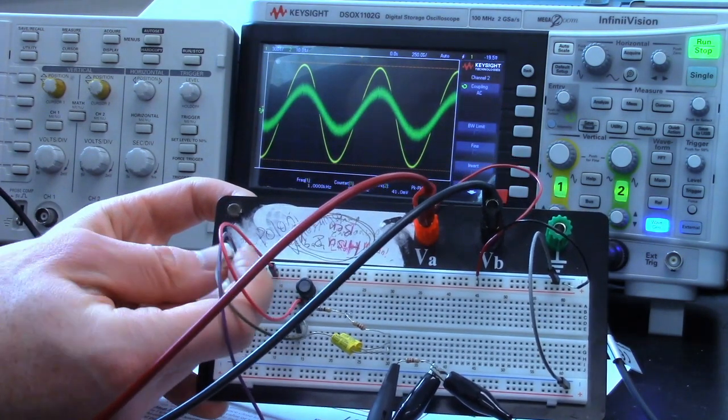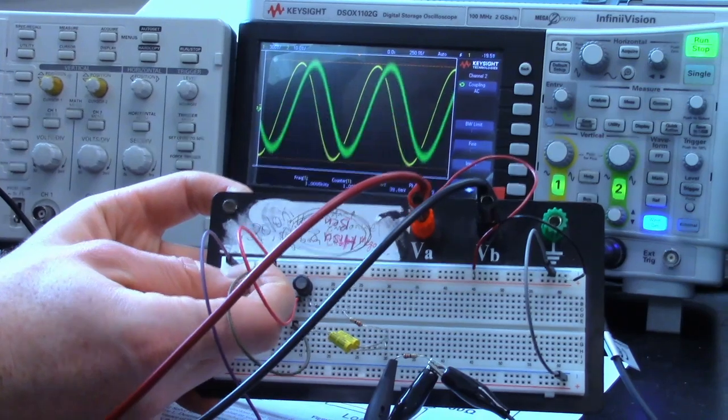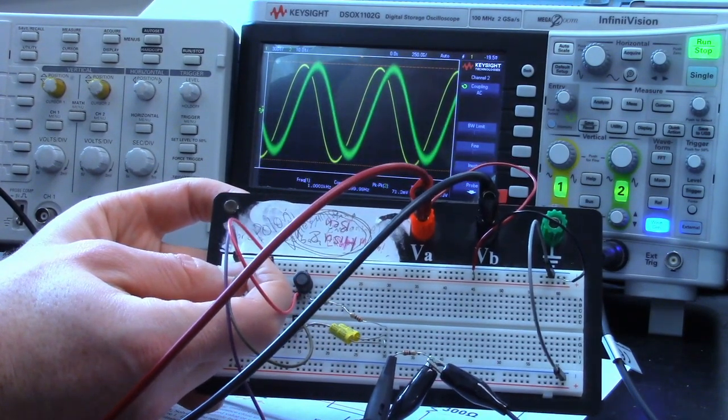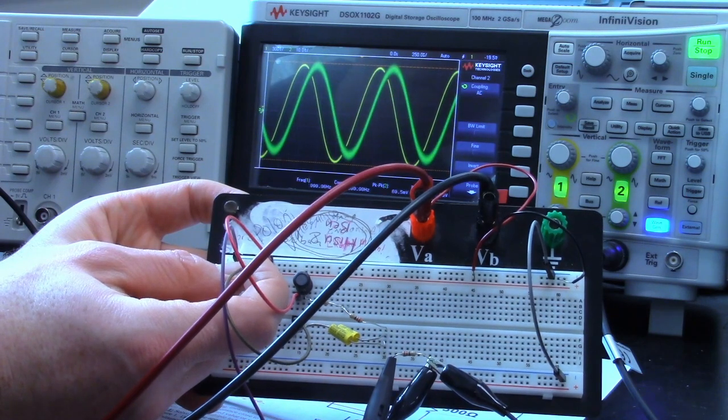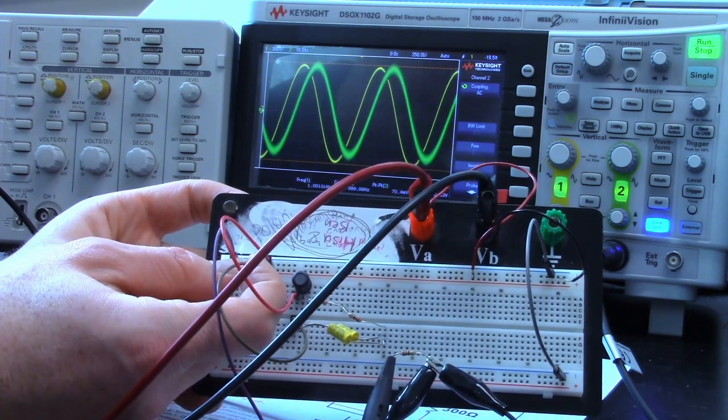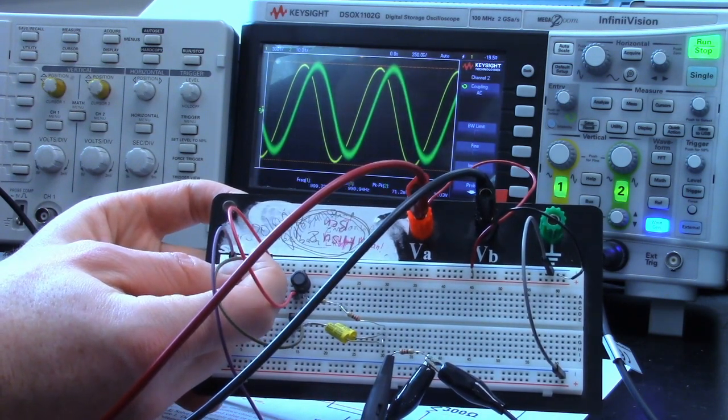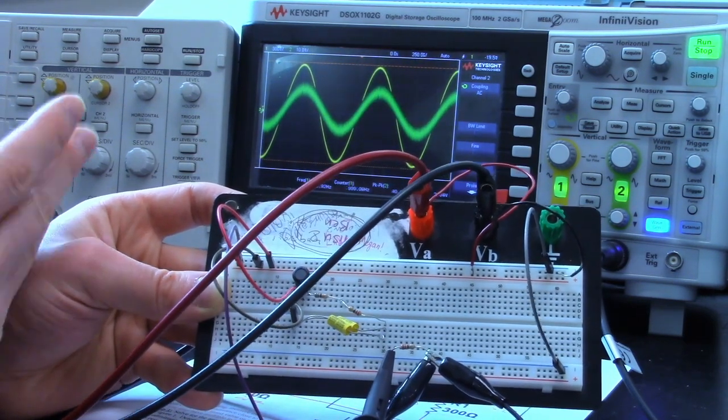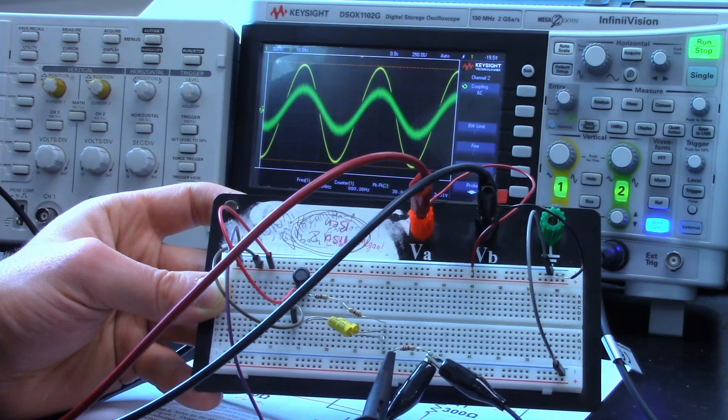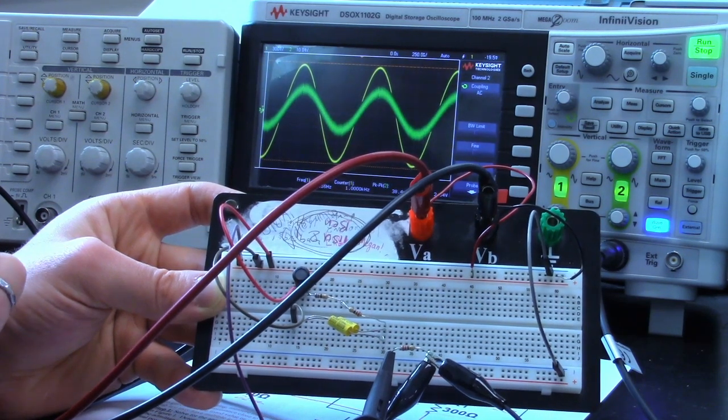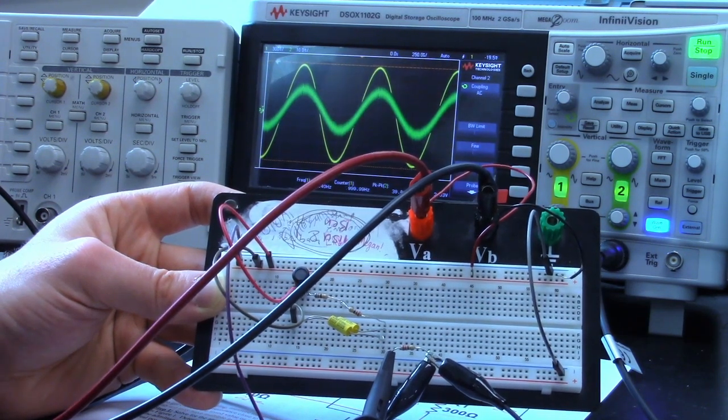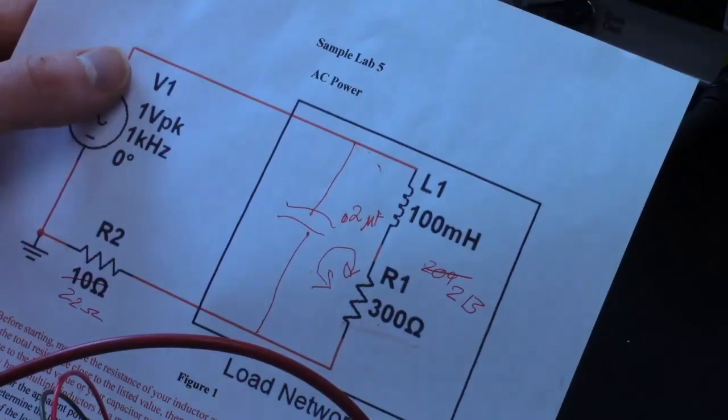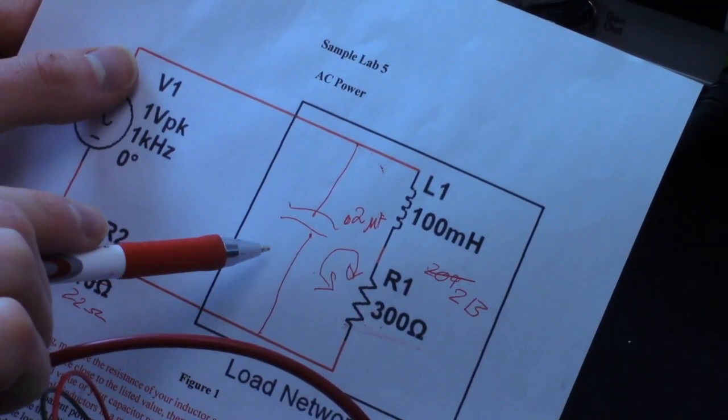And what we're doing is alternately attaching and detaching the capacitors. So without them we've got a higher RMS current and it's phase shifted, so the same kind of real power but we've got a lot of reactive power now. And when we attach it we have pretty much in phase current with voltage, so the real power should be the same and the reactive power should have reduced a fair bit.